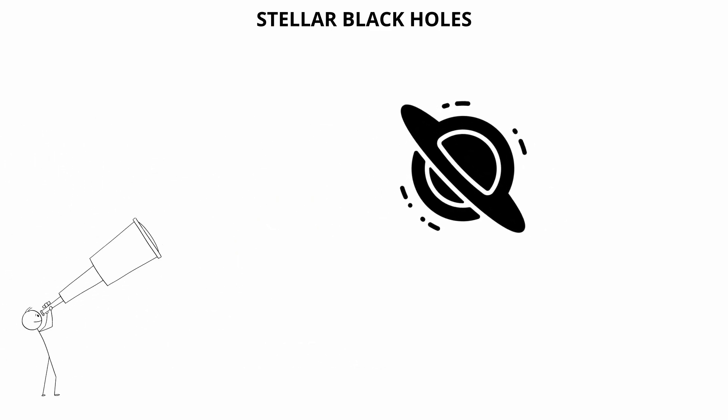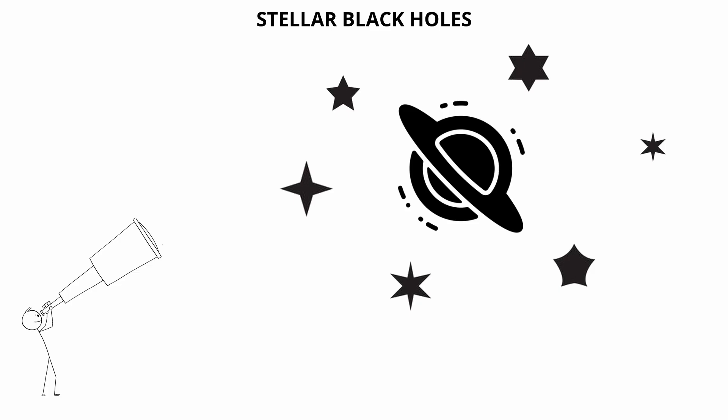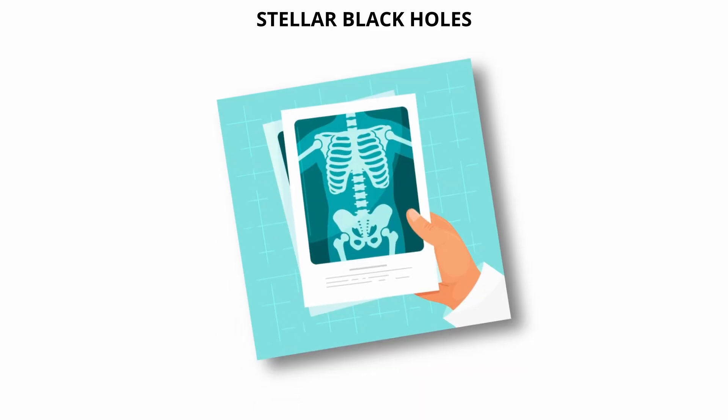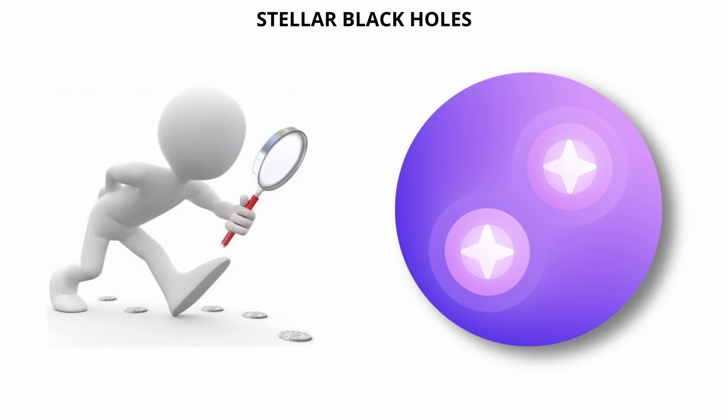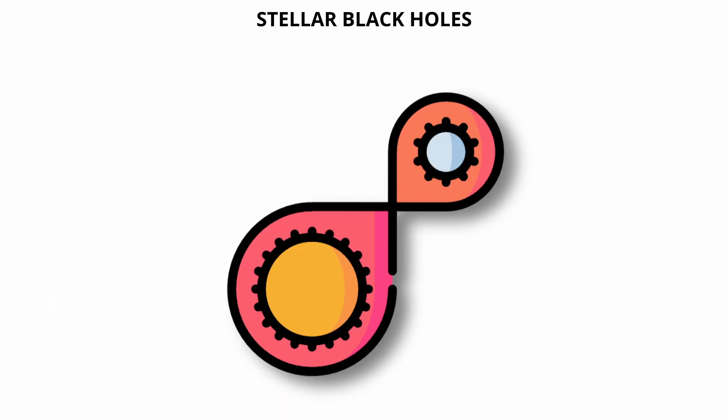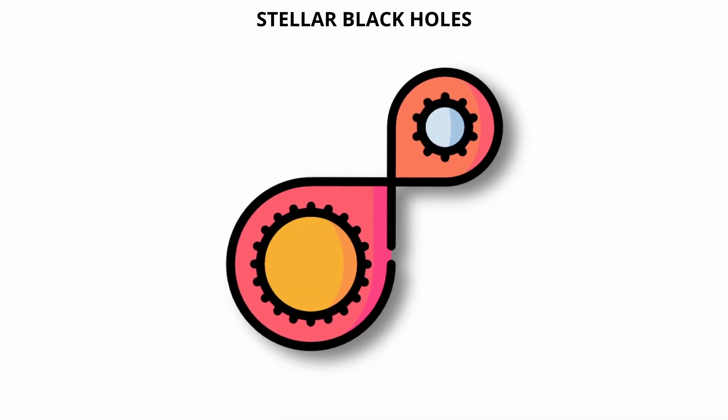Stellar black holes can be detected indirectly by their gravitational effects on nearby stars or by the x-rays emitted when matter falls into them and heats up. These black holes are often found in binary star systems where they siphon matter from a companion star, making them easier to identify.